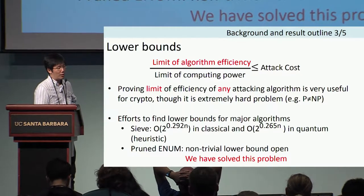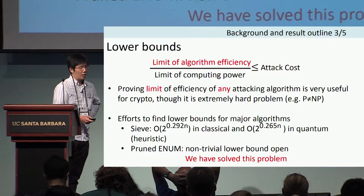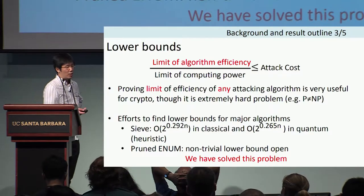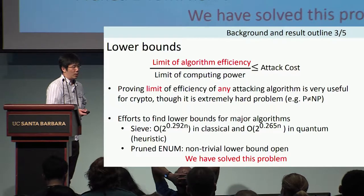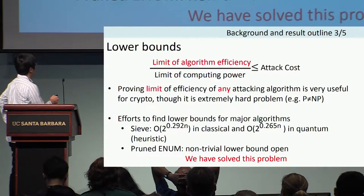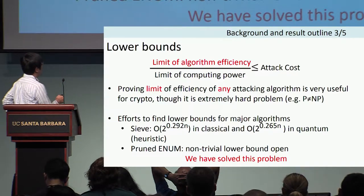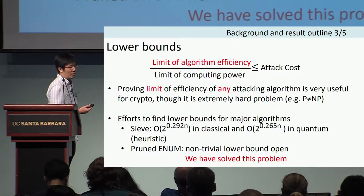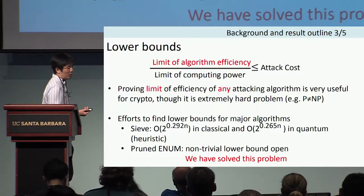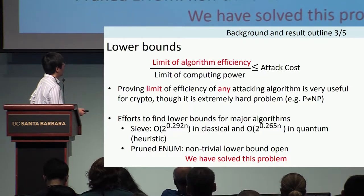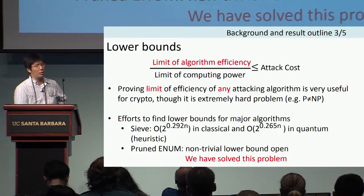We need to understand the limit of some major algorithms. For example, for the sieve algorithm, there is a realistic lower bound in both the classical and quantum settings. But no one has addressed the enumeration algorithm — and we have solved this problem. This is the topic of this talk.